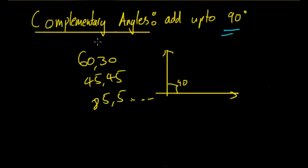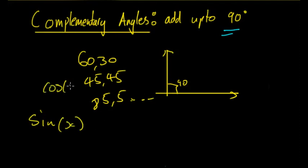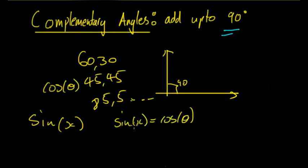Complementary angles are quite important with regards to trigonometry, as you've seen before with sine and cosine. If you have sine x and cos θ, and x and θ are complementary angles, then they are equal in the first quadrant. So sine x is equal to cos θ when x and θ are between 0 and 90 degrees.